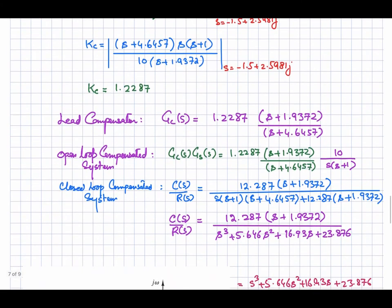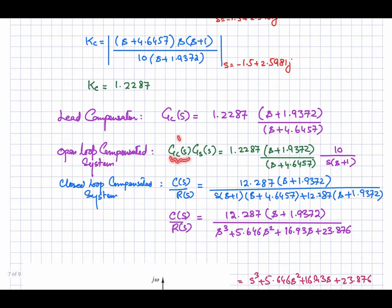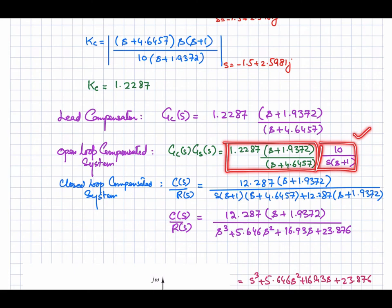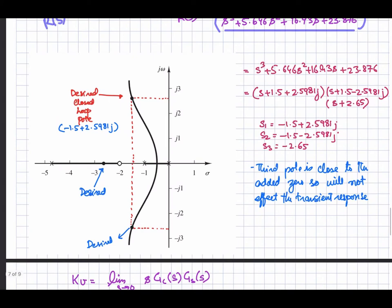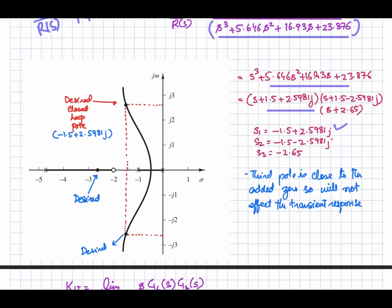The compensated open-loop transfer function is the compensator transfer function multiplied by the plant G(s). The closed-loop transfer function G(s)/[1+G(s)] gives a third-order system with two complex poles at the desired positions and one real pole. Factorizing confirms the two complex conjugate poles and one real pole.